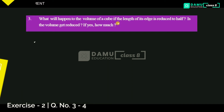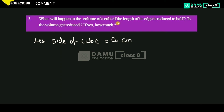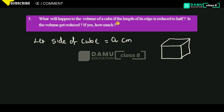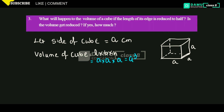First of all, let's take the length side of the cube equal to A centimeters. Draw the cube — inside you can take it as dashed lines, that is hidden lines. So this length, breadth, and height will all be A centimeters. Then volume of cube will be equal to length into breadth into height, which is A into A into A. That is A cube centimeter cube.